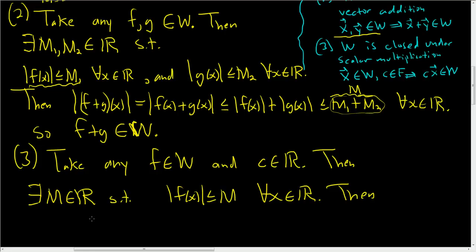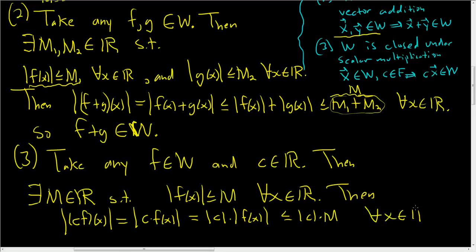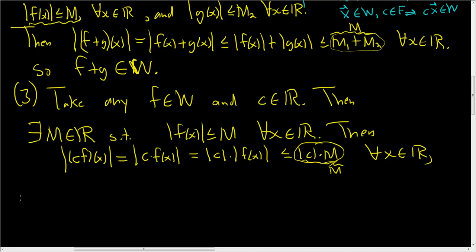Then, and now we have to look at the scalar product, C F of X. And we have to show that this is bounded. So this is equal to the absolute value of C times F of X. The absolute value of a product is the product of the absolute values. This is C times the absolute value of F of X. And this is less than or equal to the absolute value of C times M. And this is for all X in R. So here we have our new M. This is our new constant, say M tilde. So we have C F of X less than or equal to some constant for all X in R. So the vector C F is in W.